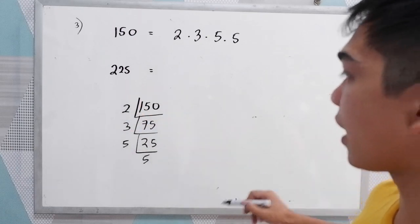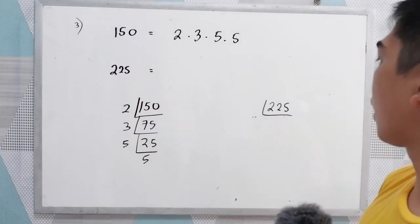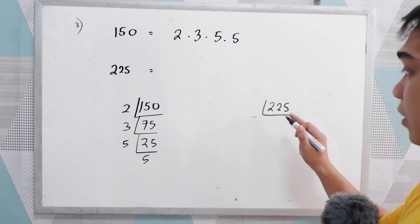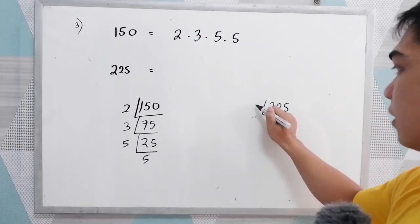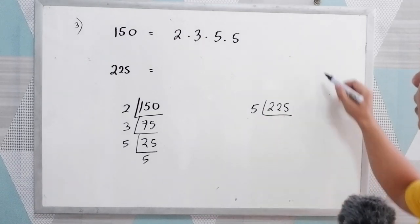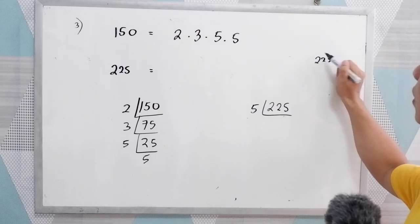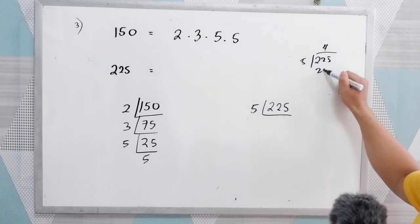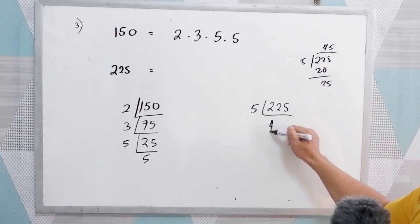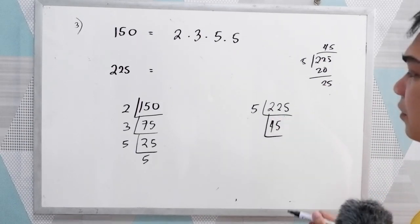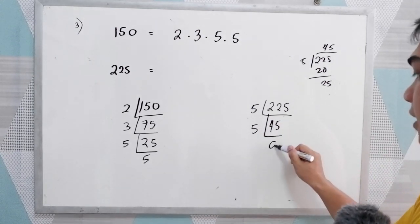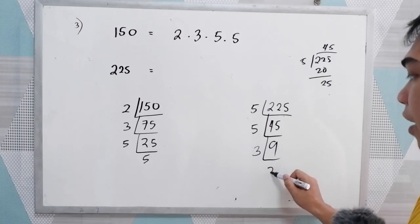Now let us proceed with 225. 225 is not divisible by 2, but it is divisible by 5. So 225 divided by 5 is 45. 45 is divisible by 5, so 45 divided by 5 is 9. 9 is divisible by 3. So the prime factors of 225 are 5 times 5 times 3 times 3.